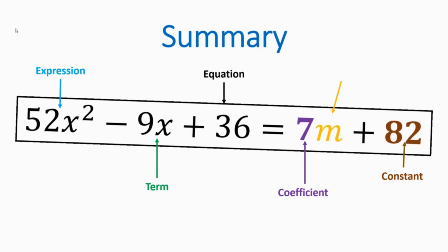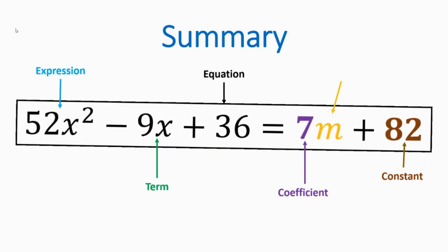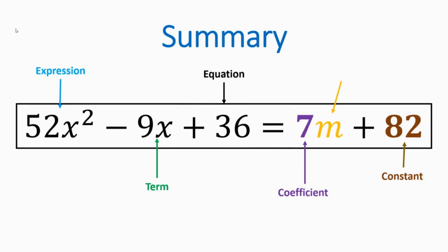In summary, we have an equation. We call this an equation because of that equal sign between the expression on the left hand side as well as the one on the right hand side. The purple number 7 is a coefficient because it's in front of that yellow variable m, while 82 is a constant because it's standing on its own, same as 36 on the left hand side. We also have a term 9x and this equation has 5 terms in total.